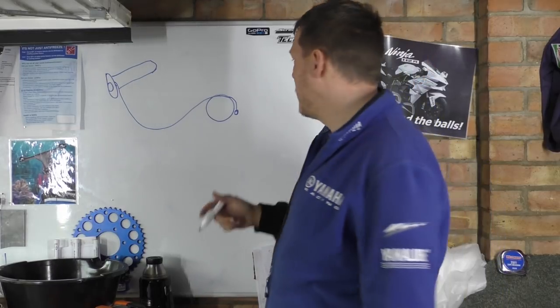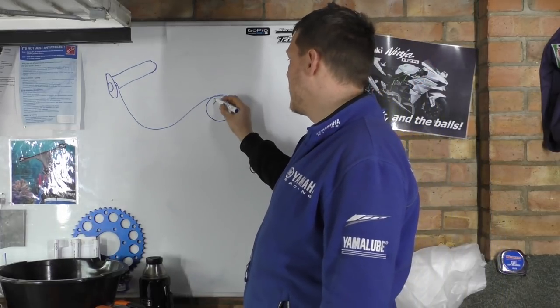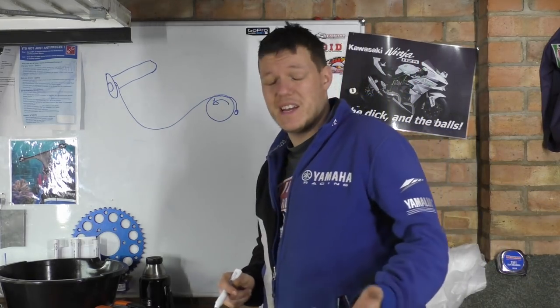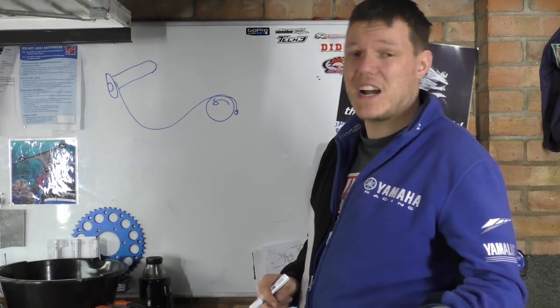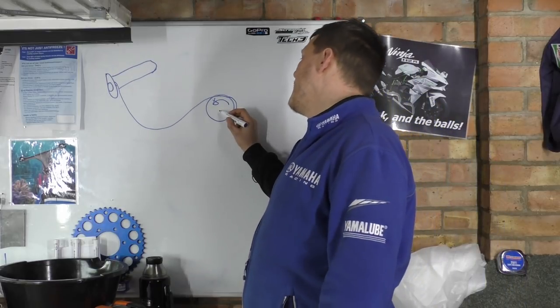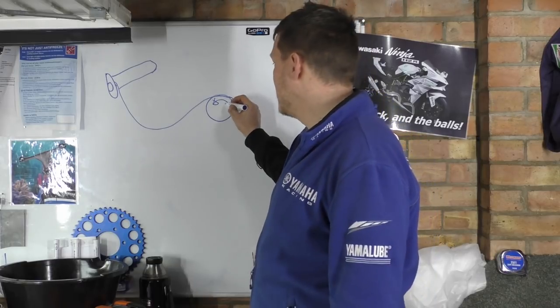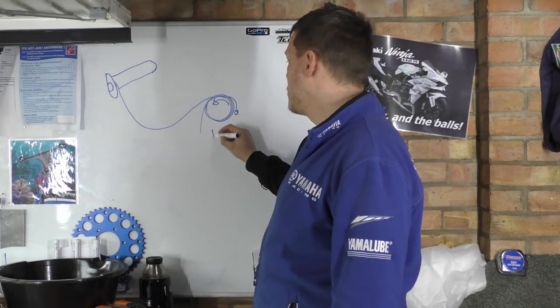Anyway, when you twist your throttle it pulls this around. And this can either be the butterflies to your throttle for your carb, or it can be your slide on your carb, something like that. And when you let go of your throttle, it is a spring, a torsion spring.